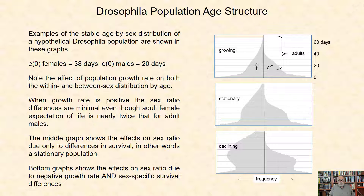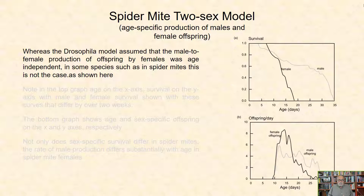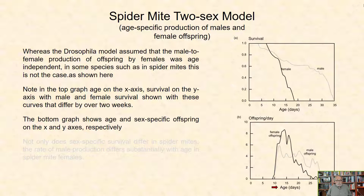Age-specific sex ratio in spider mites. Whereas the Drosophila model assumed that the male-to-female production of offspring by females was age-independent, in some species such as spider mites this is not the case. Note in the top graph, age on the x-axis and survival on the y-axis, with male and female survival shown with curves that differ by over two weeks. The bottom graph shows age and sex-specific offspring on the x- and y-axes, respectively.